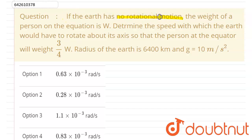no rotational motion, the weight of a person on the equator is W. Determine the speed with which the earth would have to rotate about its axis so that the person at the equator will weigh 3/4 W. The radius of the earth is 6400 kilometers. It is given here.